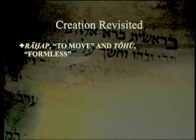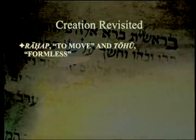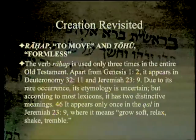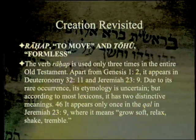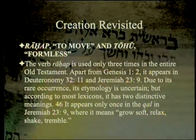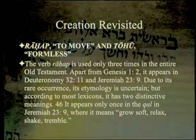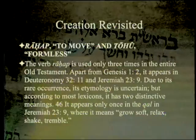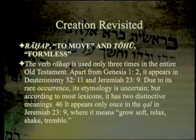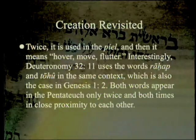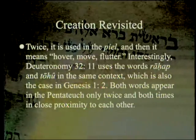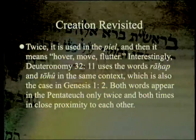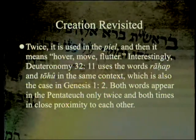The next terms are 'rahap' (to move, hover) and 'tohu' (formless, as in 'tohu wabohu'). The verb 'rahap' is used only three times in the entire Old Testament: Genesis 1:2, Deuteronomy 32:11, and Jeremiah 23:9. Due to its rare occurrence, its etymology is uncertain, but it has two distinct meanings. It appears once in the qal in Jeremiah 23:9, where it means 'to grow soft, relax, shake, tremble,' and twice in the piel (intensified form), meaning 'to hover, move, or flutter.' Deuteronomy 32:11 uses both 'rahap' and 'tohu' in the same context — as also occurs in Genesis 1:2 — with both words appearing in the Pentateuch only twice, both times in close proximity.